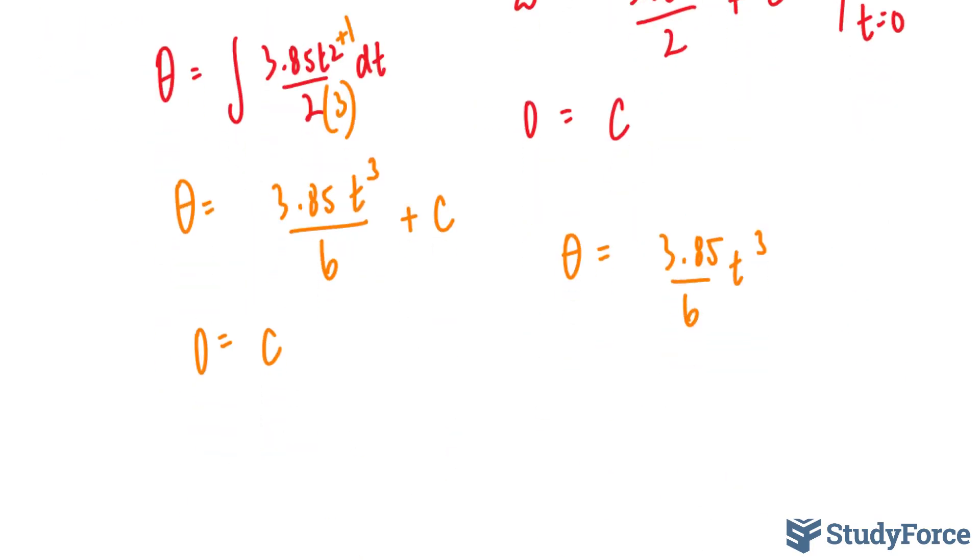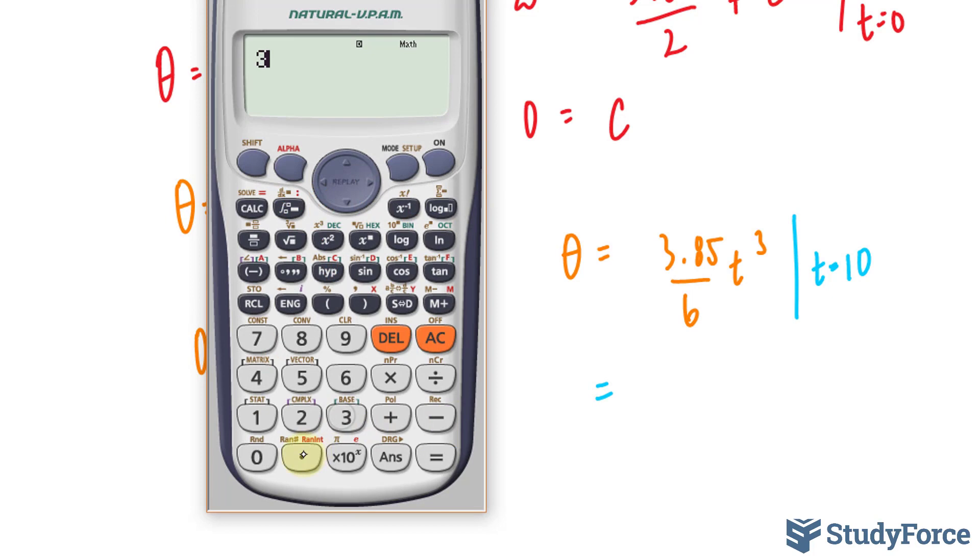So what I can do is substitute t equals 10, and let's see what we get. 3.85 times 10 to the power of 3 divided by 6, and this gives me 641.6.